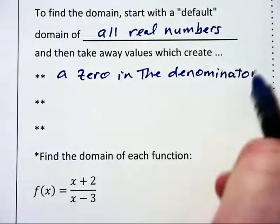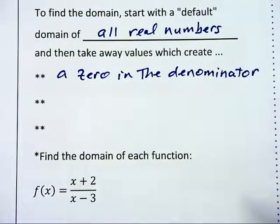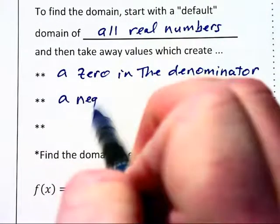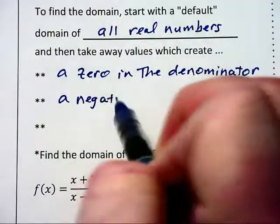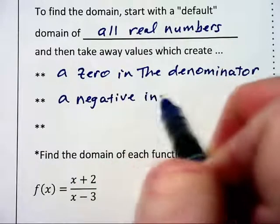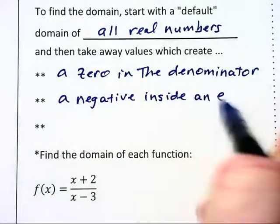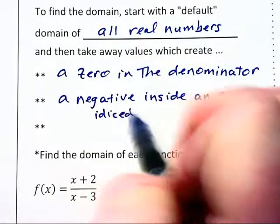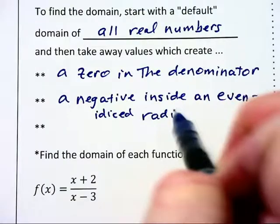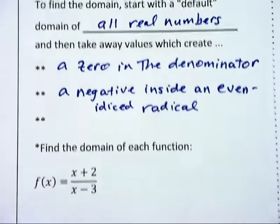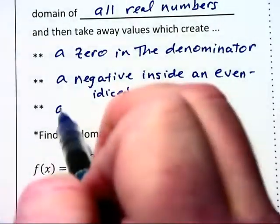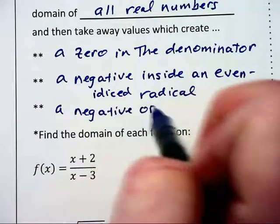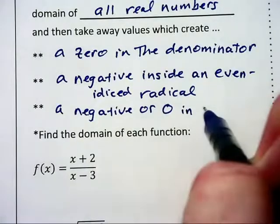We're never allowed to divide by zero. We take away values which will create a negative inside an even indexed radical, such as a square root, or values that create a negative or zero inside a logarithm.